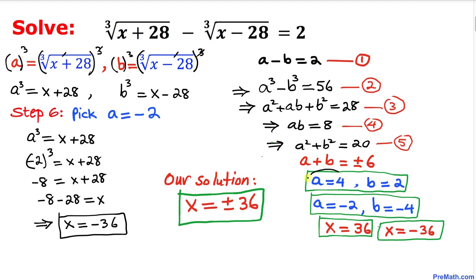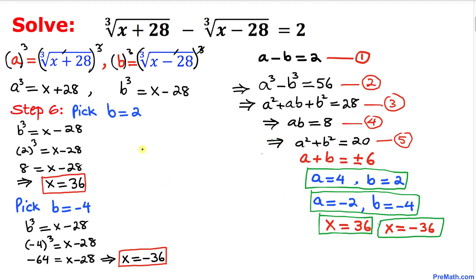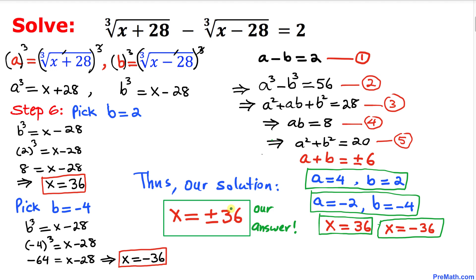Note that we only used the a values, but if you use the b values — b = 2 and b = -4 — you get the same solutions. Our final answer is x = ±36. Thanks for watching, and please don't forget to subscribe to my channel for more exciting videos!